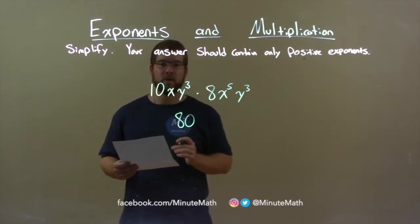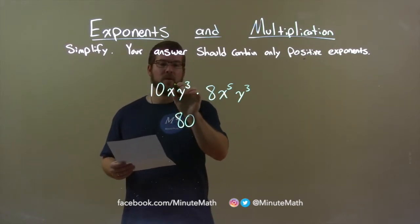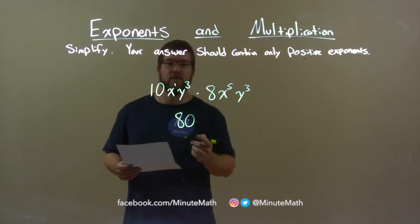Now we worry about the variables. So, first variable is x. When it's just by itself, we know it's x to the 1st power. x to the 1st power times x to the 5th power.